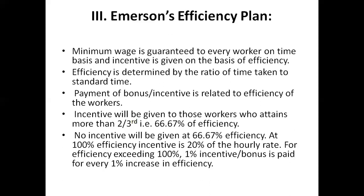We can explain this with an example. If the standard time for a job is nine hours and the worker performs the job in six hours, that is two-thirds — so he will not be paid any incentive. If the standard time is nine hours and the worker performs in nine hours, his efficiency is 100%, and he will be paid 20% of the hourly rate on top of his basic wages.